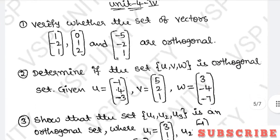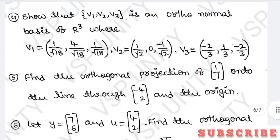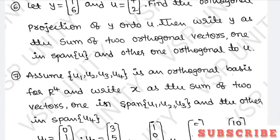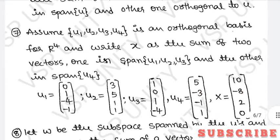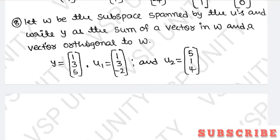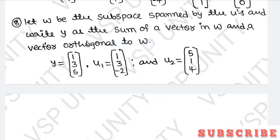Fourth unit has three or four concepts. First is the orthogonal concept — questions one, two, and three are based on orthogonal. Next is orthonormal — that is the fourth concept. Fifth question is orthogonal projection, which is different from orthogonal itself. Sixth question is also orthogonal projection. Seventh question is orthogonal basis. If you understand questions one to seven, you can solve eighth question easily. Eighth question: express y as the sum of a vector in W and a vector orthogonal to W.